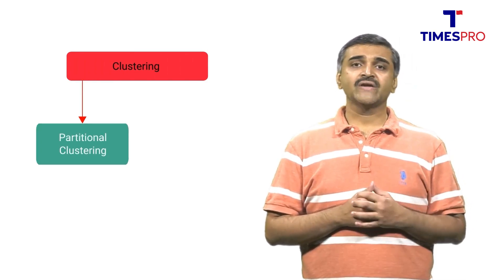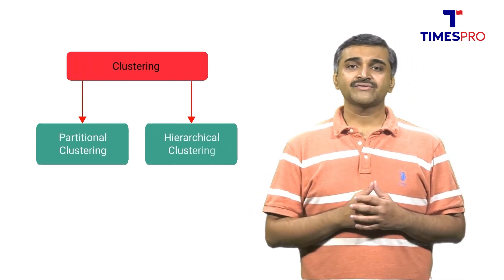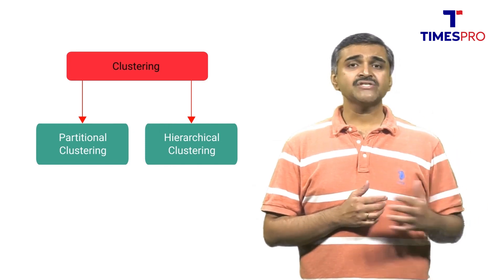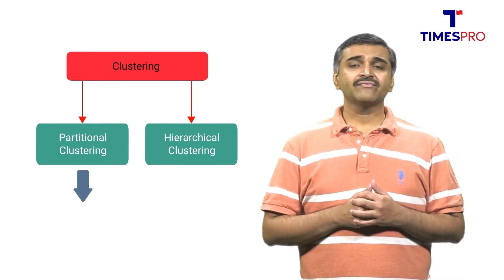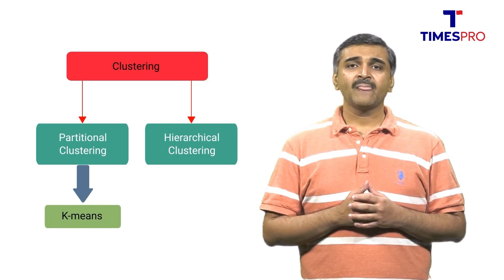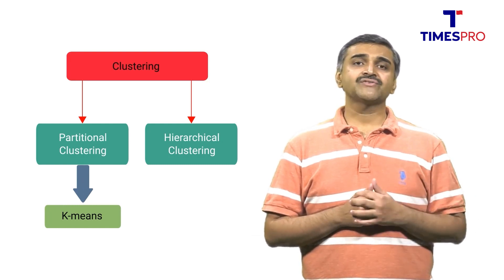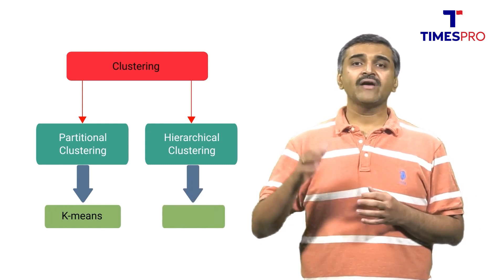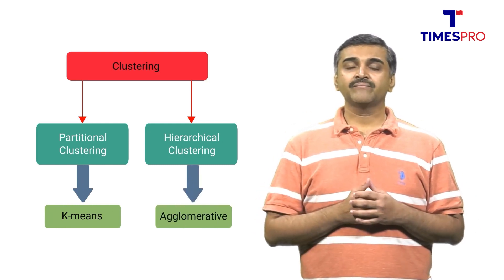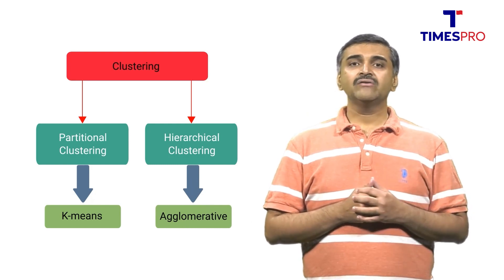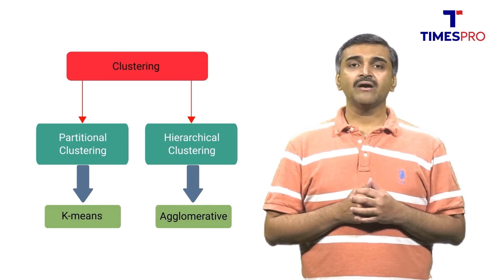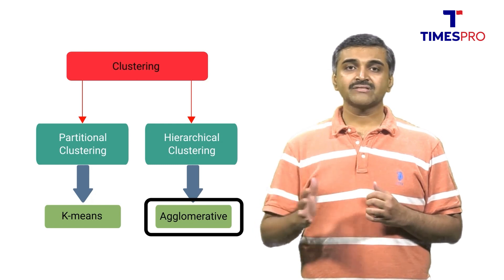Let's understand the different types of clustering. Clustering is of two types: partition clustering and hierarchical clustering. In partition clustering, we have k-means clustering, and in hierarchical clustering, we have agglomerative clustering. In this lecture, we are going to discuss about agglomerative clustering.